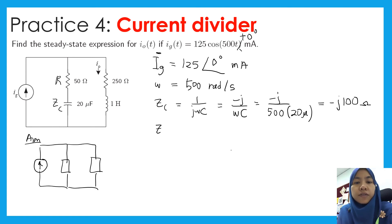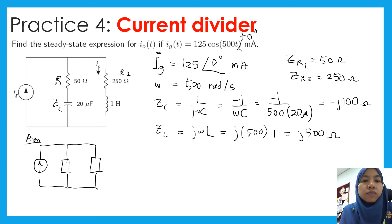And what is impedance of L? ZL is equal to jωL equal to j into 500 and L is equal to 1. So this is equal to j500 ohms. What is impedance of R? R1 is equal to 50 ohms. And impedance of R2 is equal to 250 ohms. So this is R2. This is R1.